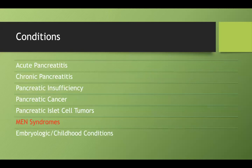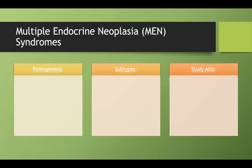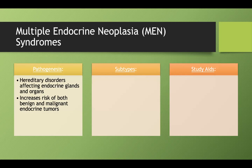Now let's talk about some of the MEN syndromes. Multiple endocrine neoplasia syndromes are a set of three testable syndromes that relate to random neuroendocrine tumors. It's a hereditary disease that affects your endocrine glands and will increase your risk of both benign and malignant endocrine tumors.